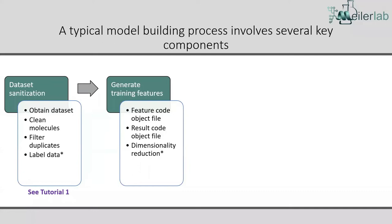Distributed with the BCL is a feature code object file — a simple text file indicating what descriptors to calculate for each molecule — and a result code object file indicating what results we're actually trying to predict. One can also do dimensionality reduction; it's possible to do PCA with the BCL to reduce your descriptor set, though it's of relatively limited utility except when you have a very small training data set and need it to generalize really well.